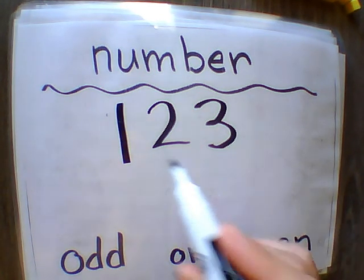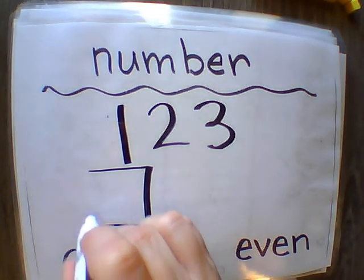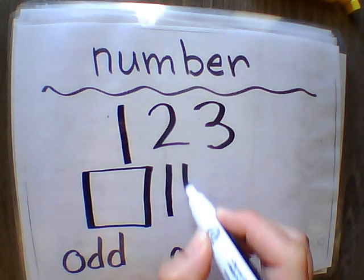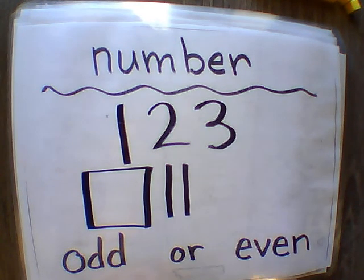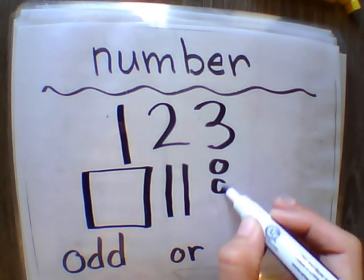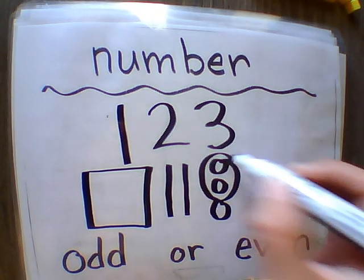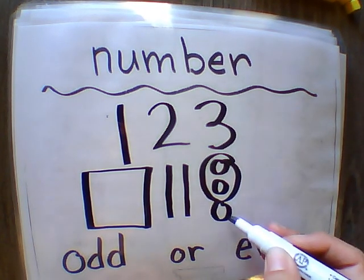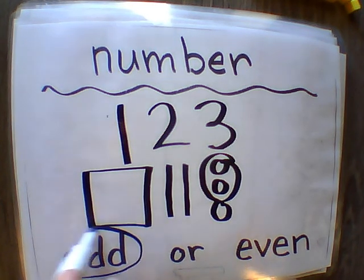So let's go through. We have one hundred twenty-three. I'm going to draw a large square for my hundred, then draw our longs — two longs. And then for our ones I'm drawing circles. I'm going to group them into pairs to see if they are odd or even. I can group these two into a pair, but there's one left over, so that means my number is odd.